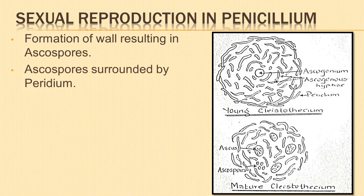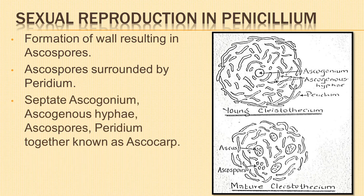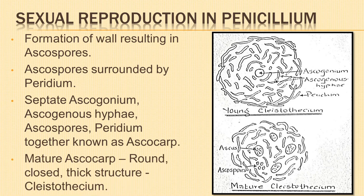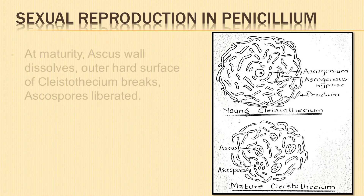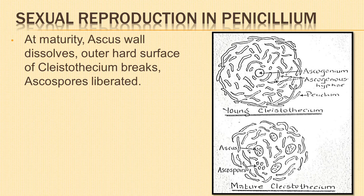The ascus is surrounded by interwoven sterile hyphae called the peridium. The septate ascogonium, ascogenous hyphae, ascospores, and peridium together are known as ascocarp. The mature ascocarp of penicillium is a round, closed, thick structure known as cleistothecium. At maturity, the ascus wall dissolves, the outer surface of the cleistothecium breaks or disintegrates, and the ascospores are liberated.